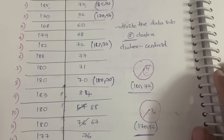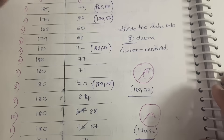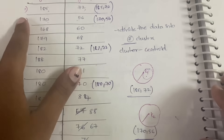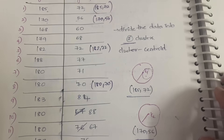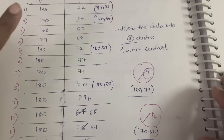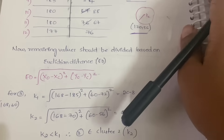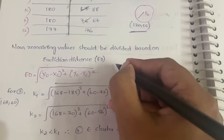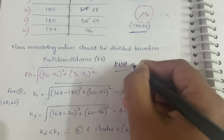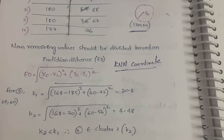Initially, the first two rows are automatically classified: the first row belongs to k1 and the second row belongs to k2. Now we start the clustering process from the third row onwards. The third data point is 168 comma 60, and we calculate the Euclidean distance to both cluster centroids.